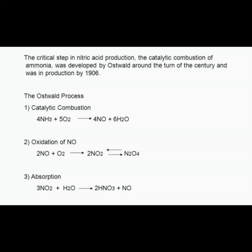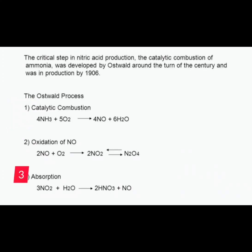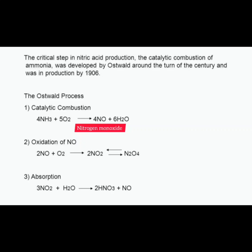The Ostwald process involves three steps: first is catalytic combustion, second is oxidation of nitrogen monoxide, and third is absorption. In the first step, ammonia undergoes oxidation with atmospheric oxygen to produce nitrogen monoxide.